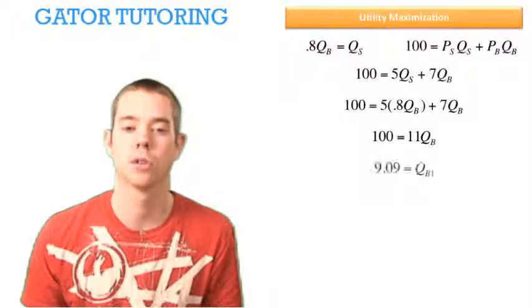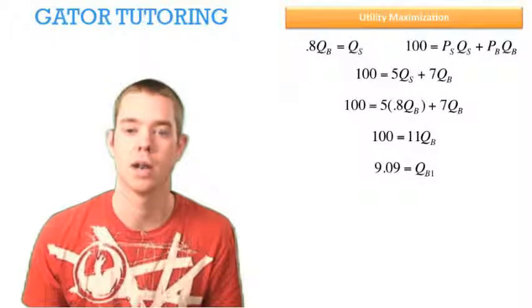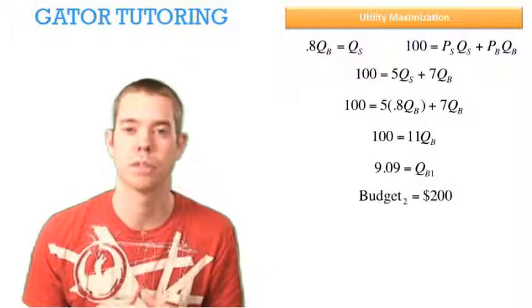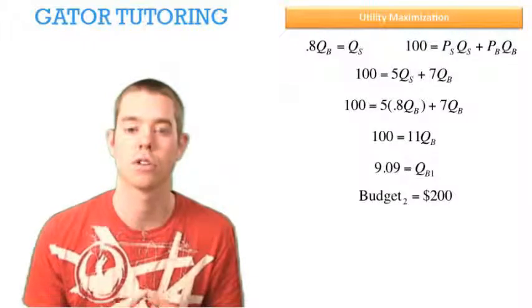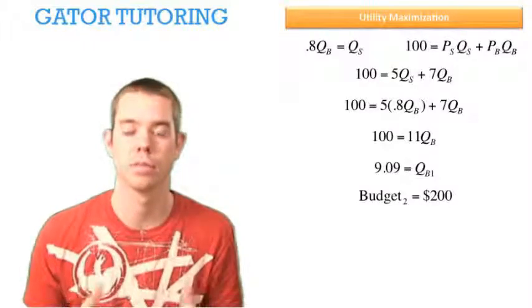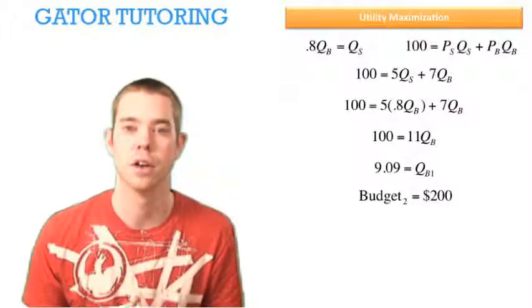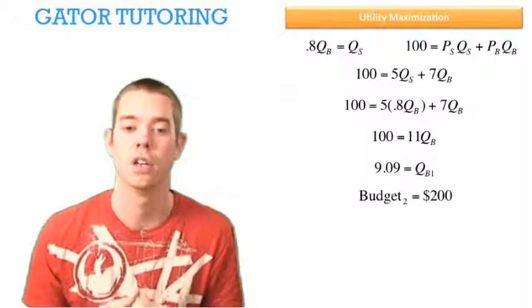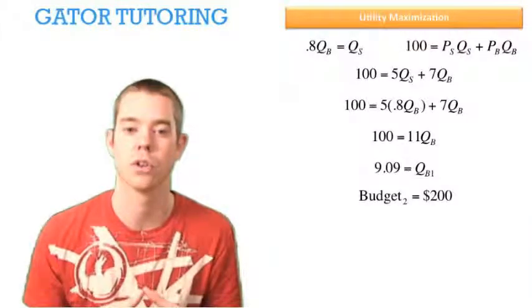So when we have $100, we're going to drink 9.09 beers. Now the only thing that's changing is our budget. Our budget is going from $100 to $200. So we don't have to rework all the steps we just did because our utility function hasn't changed, the price of beer hasn't changed, the price of sandwiches hasn't changed. The only thing that changed is that 100 is now 200.